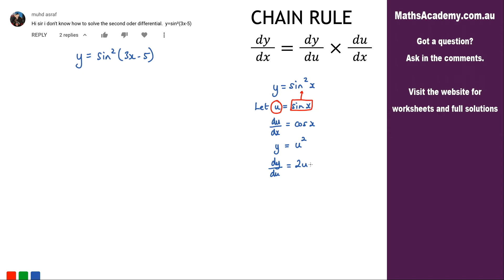So now I can use the chain rule. So dy by dx is equal to dy by du multiplied by du by dx.